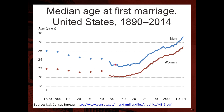Another trend is the differential by sex — men are on average older than women when they first get married, and this has been true throughout the period from 1890 to 2014. However, the differential has narrowed — it used to be around four years' difference but now it's only about two years. This reflects increasing female education, increasing female labor force participation, and women delaying marriage and catching up closer to men in terms of age at first marriage.